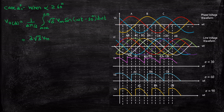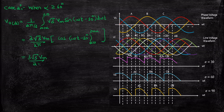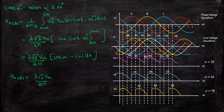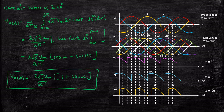Taking (3√3·V_m)/(2π) outside, integration of sine gives minus cos, so inverting limits for simplification. Substituting: cos(α) as the upper limit and cos(180°) = −1 as the lower limit. Simplifying this expression gives V_out DC = (3√3·V_m)/(2π) × (1 + cosα) — the same formula as Case 1.